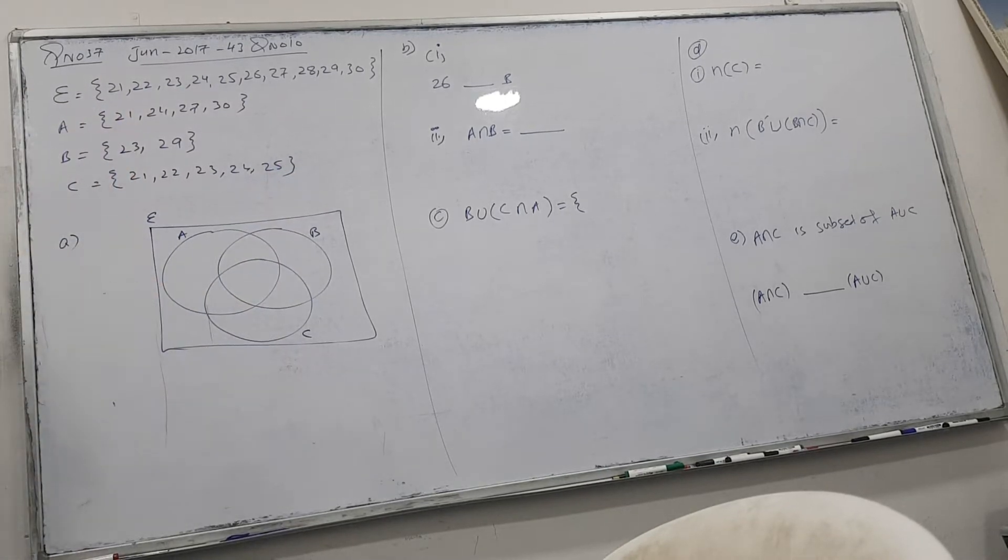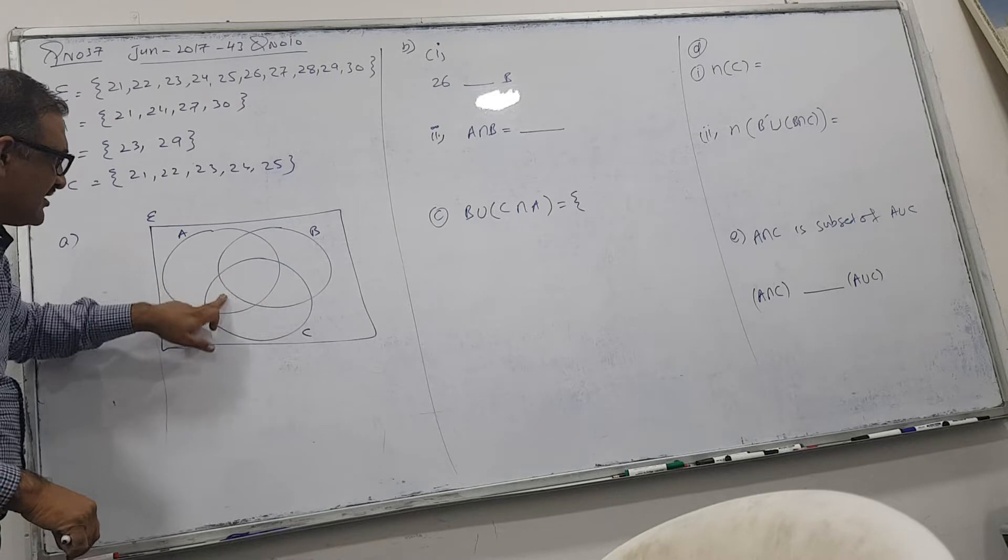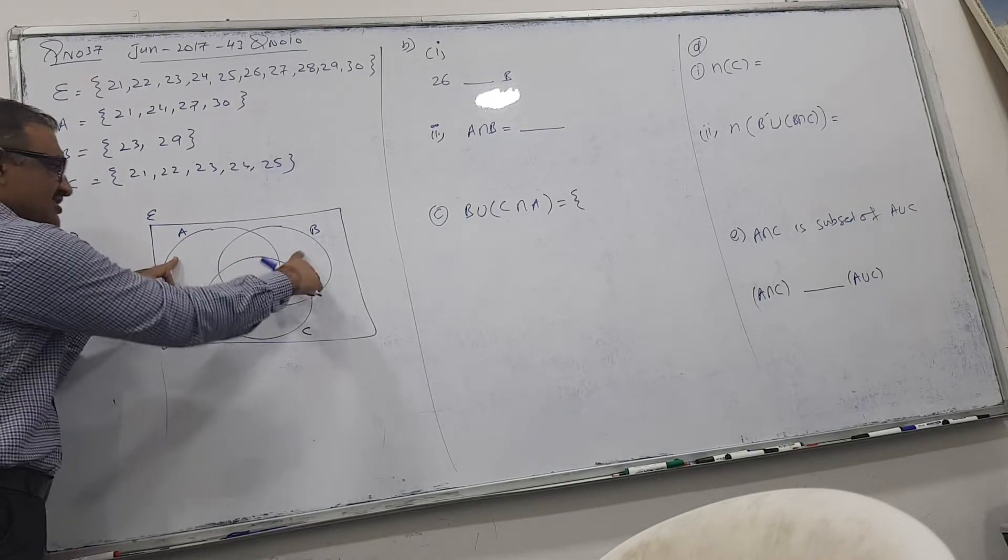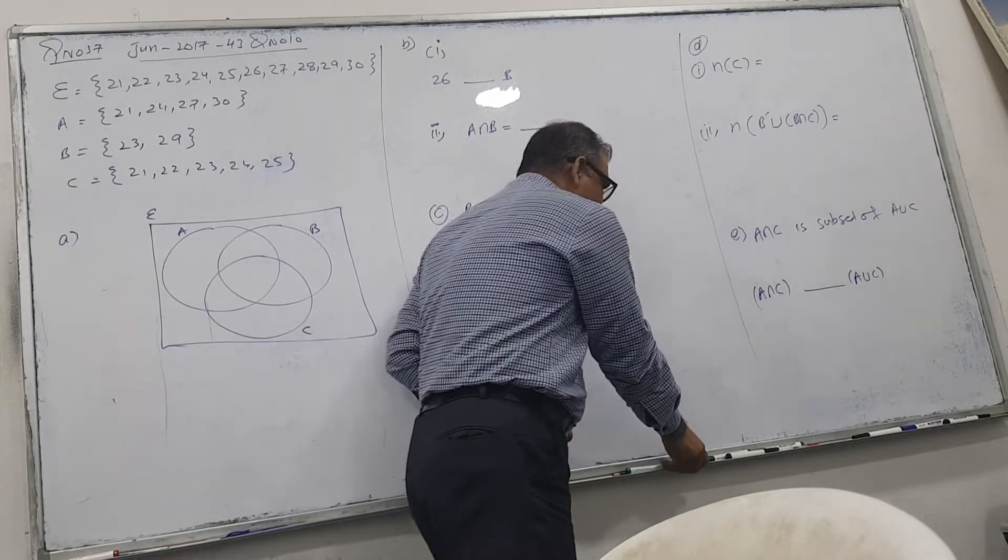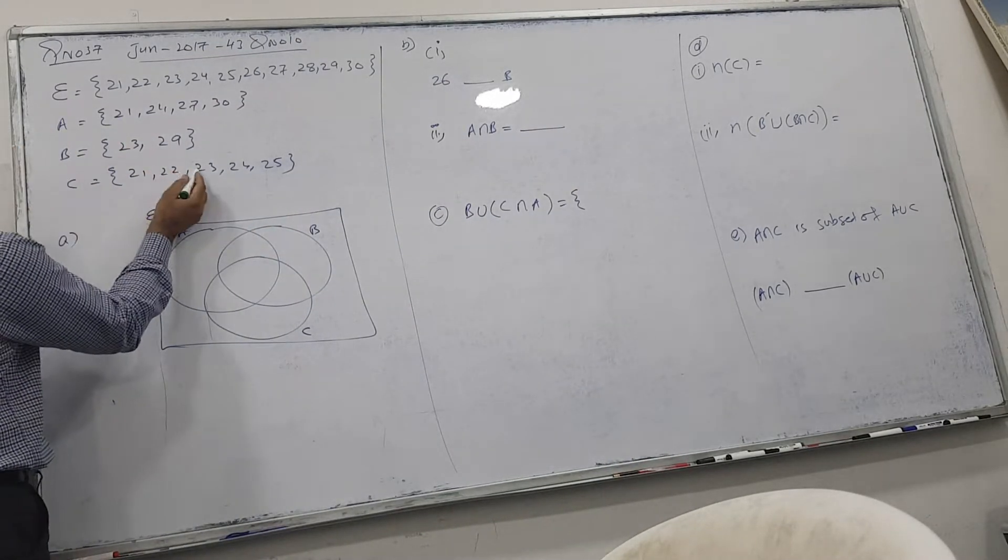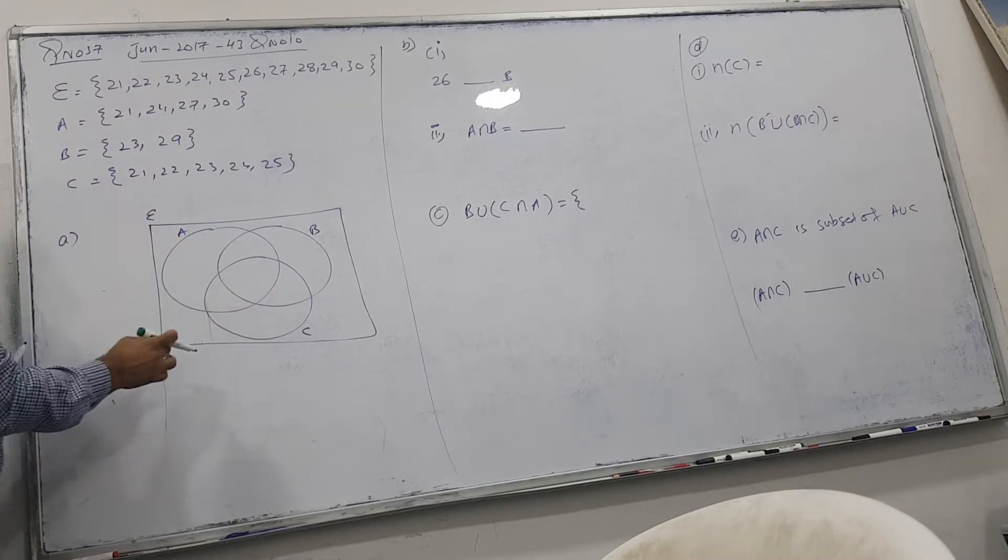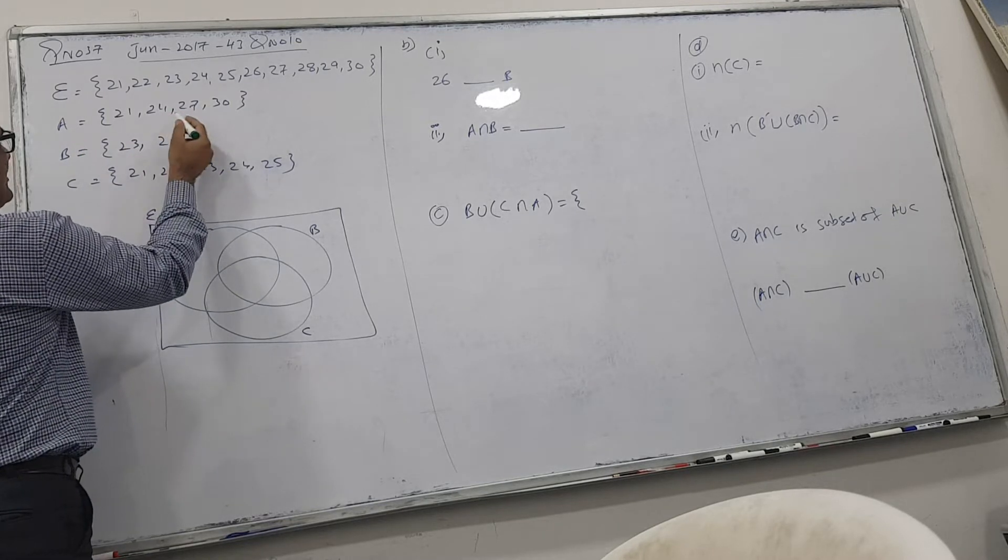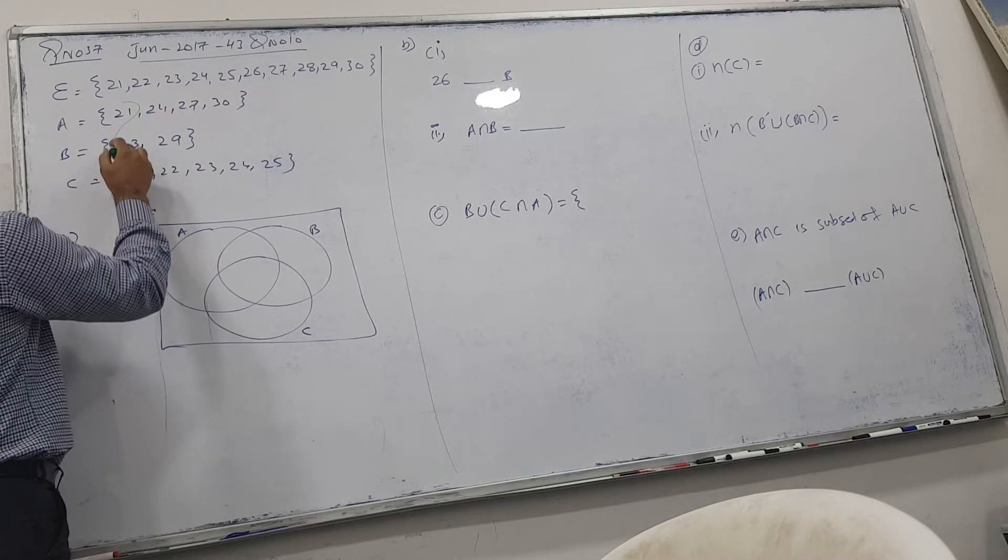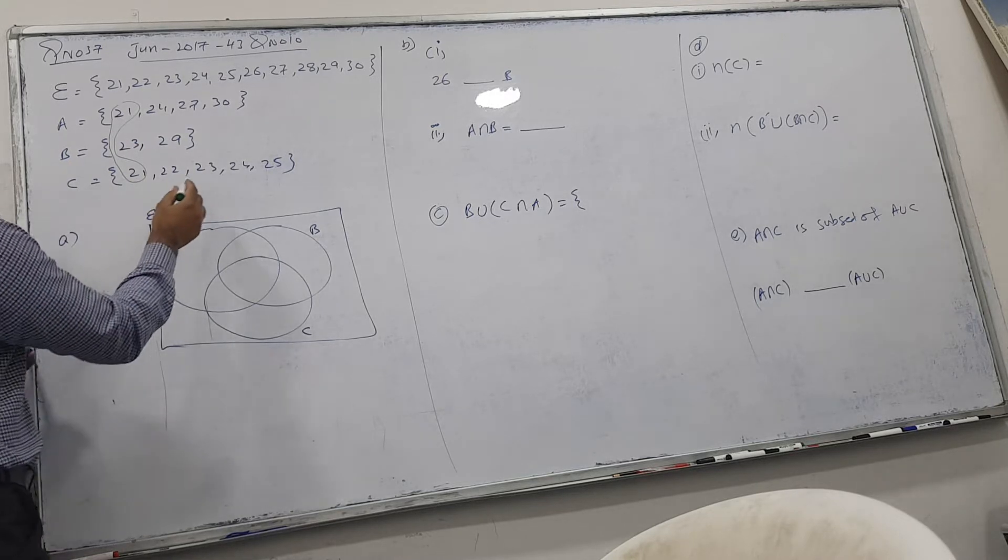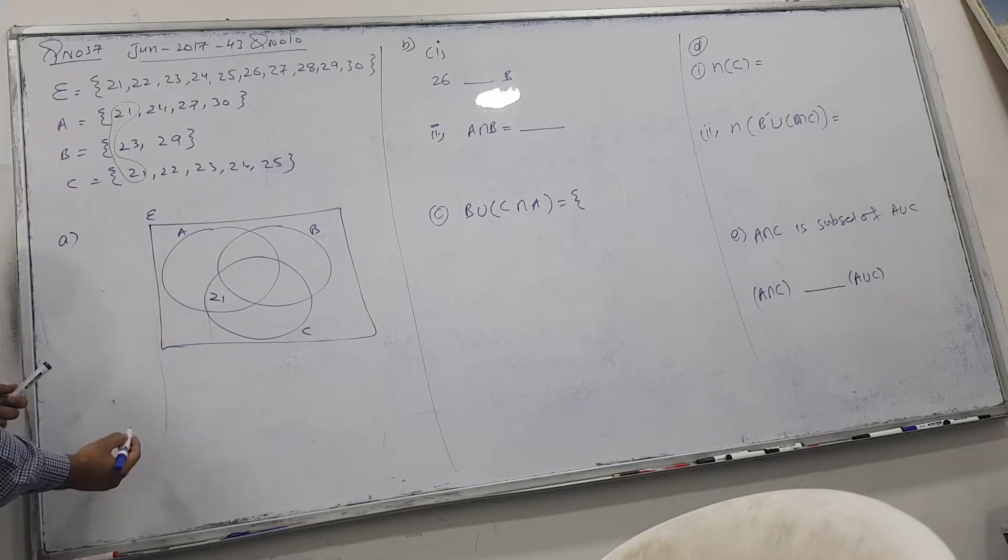Now I will fill the values. As I said before, always concentrate first on the middle part, then this part, after this and this. When I finish all these 4, then I talk about these 3, and then outside. Let's see if any member is common between all 3. 23 is present here, present, but not there. 29, nothing has come in the middle.